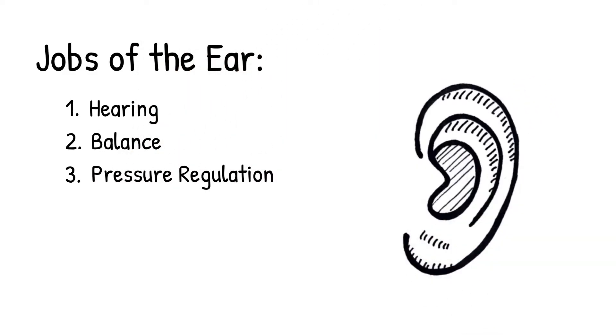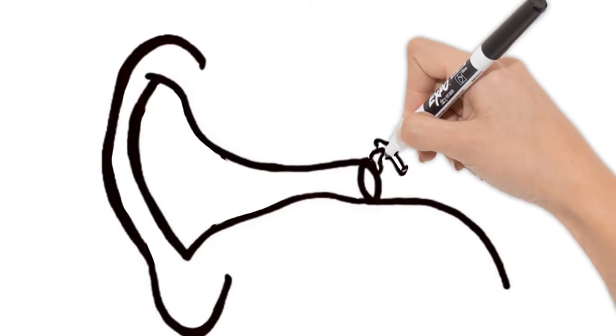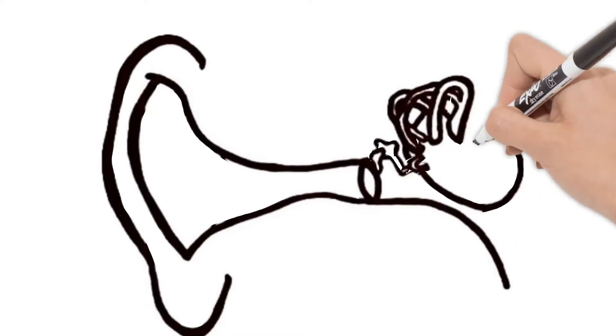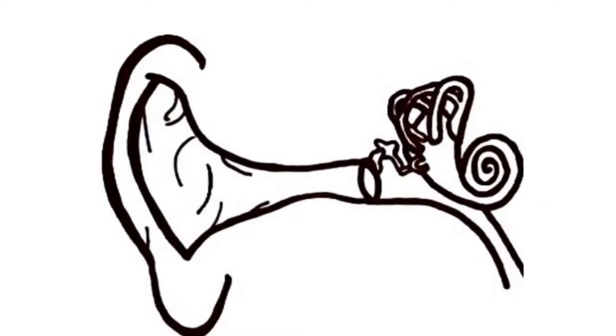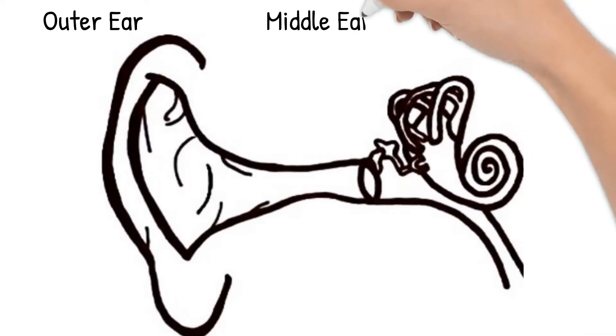As I go through the parts of the ear, I will also point out which of these three jobs it is doing. Here is a cross-section of your ear to see all the parts including those inside your head. The ear is divided into three regions: the outer ear, middle ear, and inner ear.